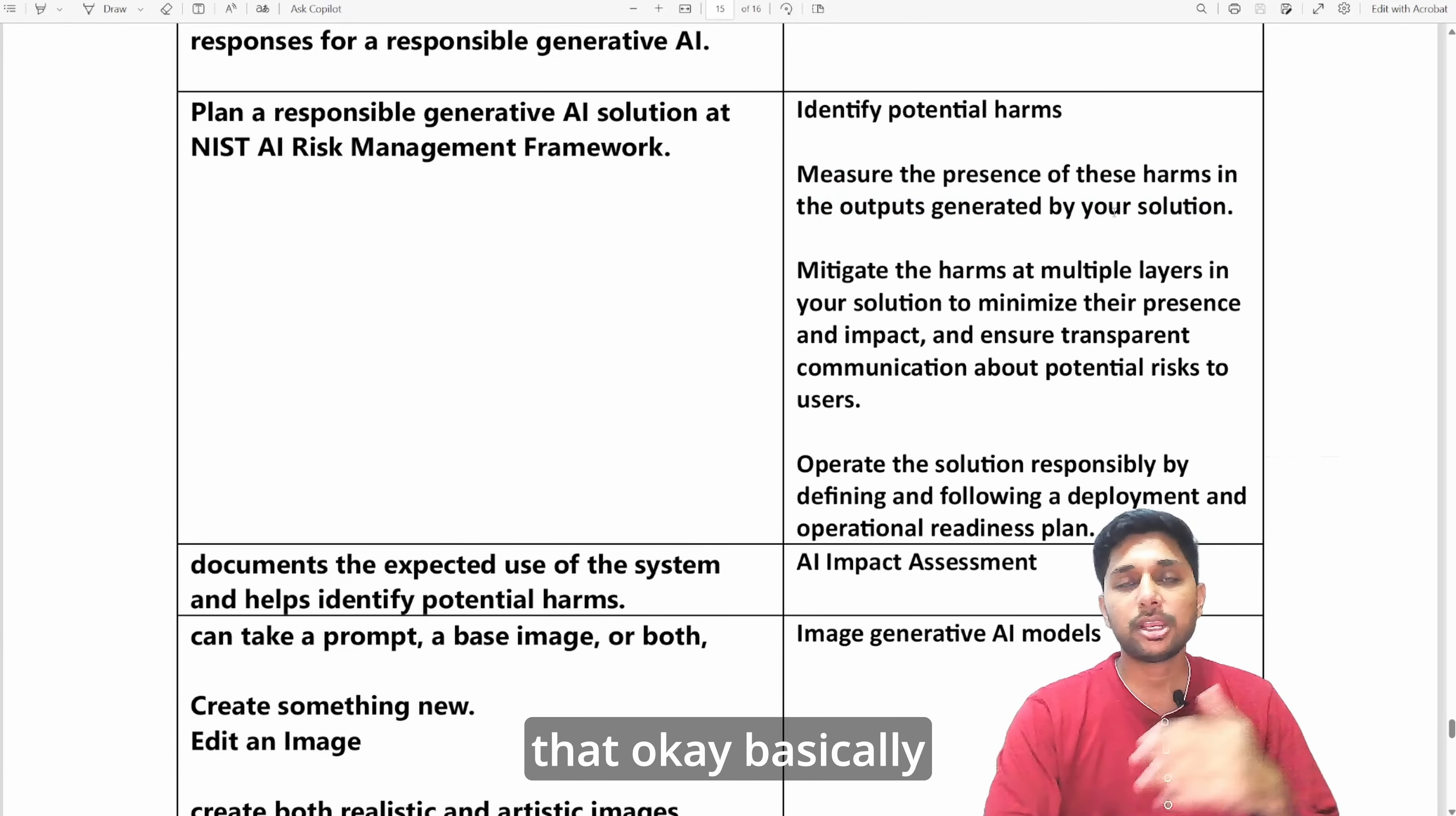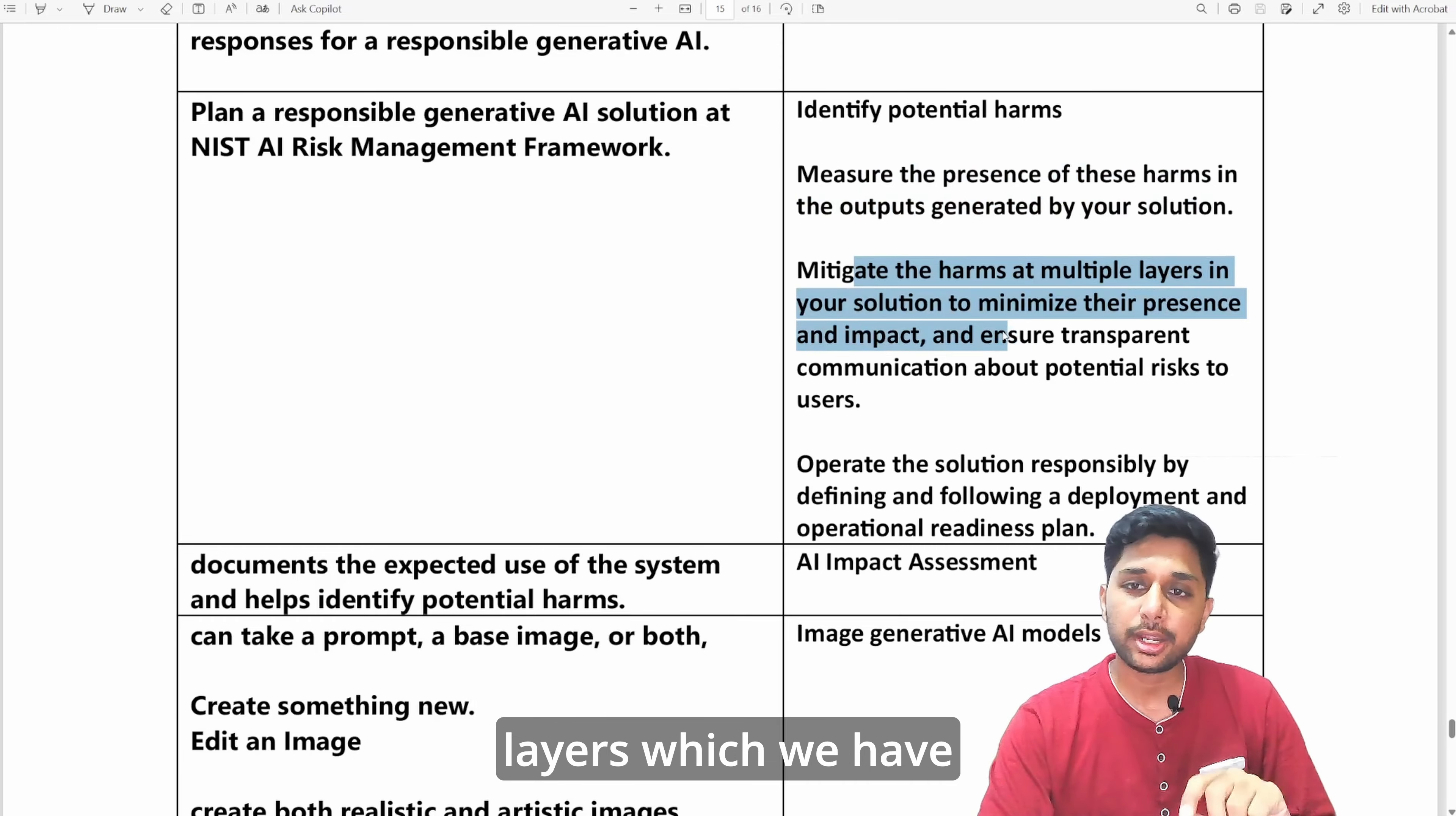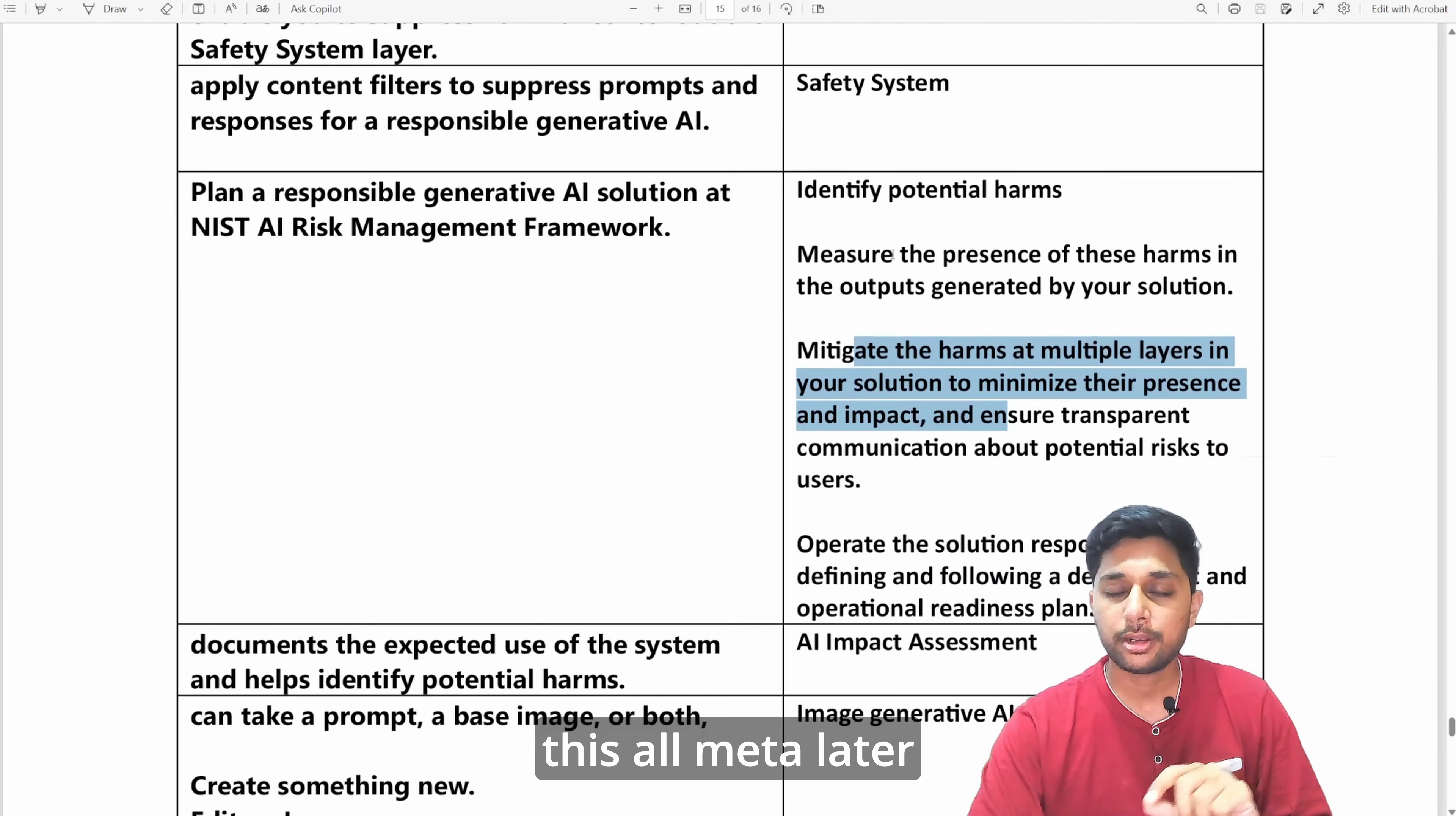You don't want to do that. Basically all the six guiding principles we talked in the very starting of this series, so I want to follow that. How can I do that? I will identify the harms, I will measure the presence of these harms in the outputs, and I will mitigate those harms at the different layers which we talked about just now.